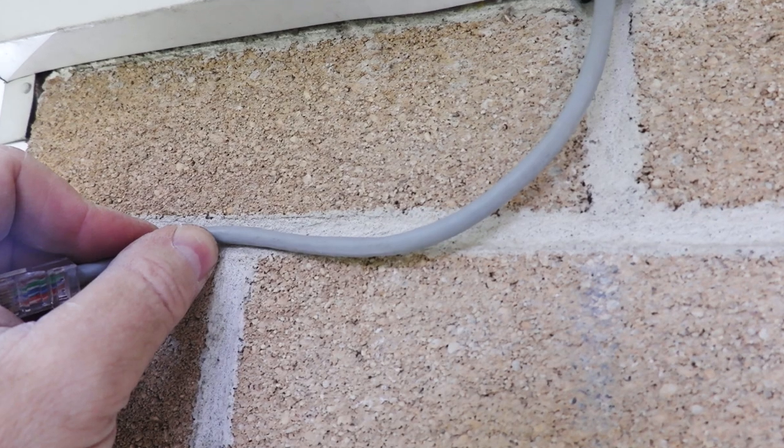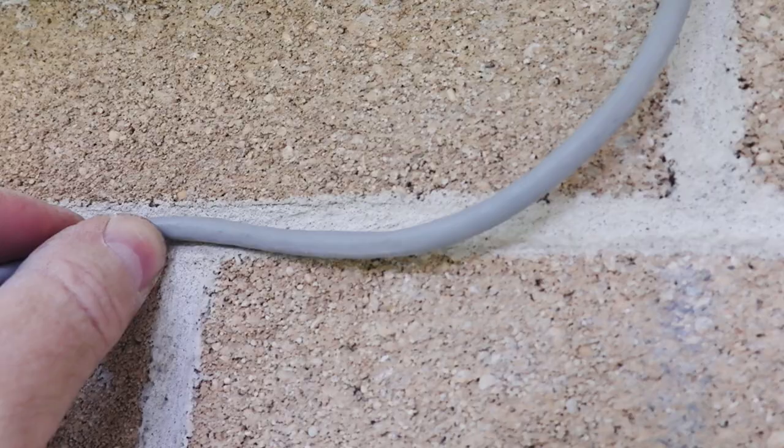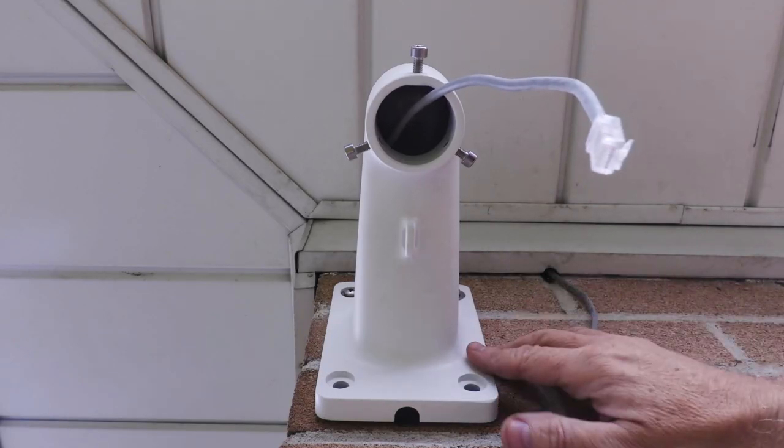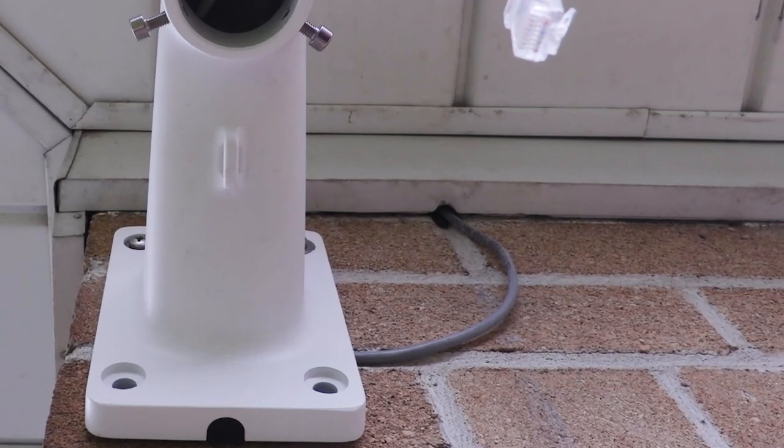We are using the recess channel of the mortar joint to insert the Ethernet cable into the mount. The gasket will provide some level of clearance for the cable as well. This small loop of cable will be covered later once the camera is installed.